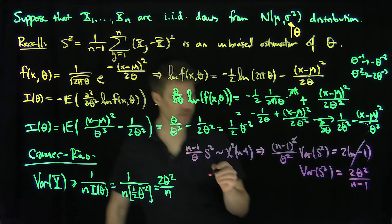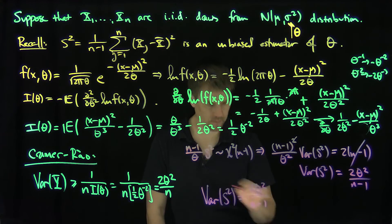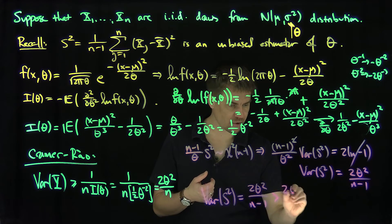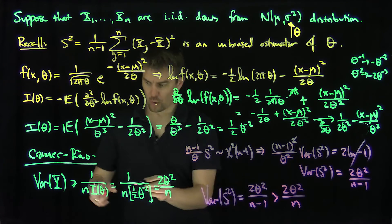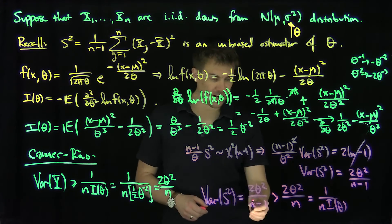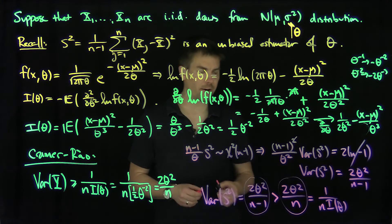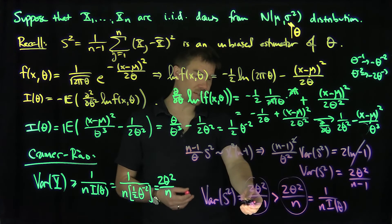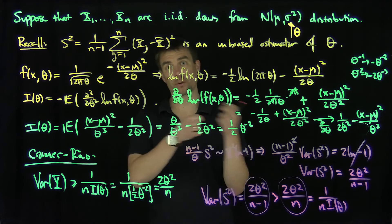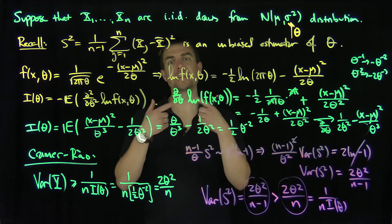The Cramér-Rao bound is 2θ²/n, but the variance of S² is 2θ²/(n−1), which is strictly larger since making the denominator smaller increases the expression. So S² is not an efficient estimator. However, the efficiency — the ratio of the Cramér-Rao bound to the actual variance — is (n−1)/n, which tends to 1 as n → ∞. So S² is asymptotically efficient. Thank you very much.